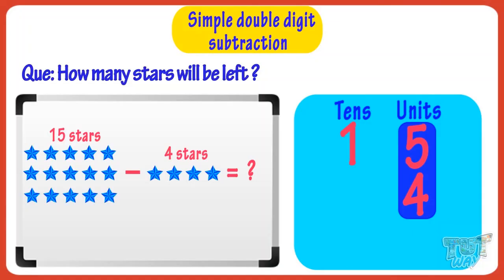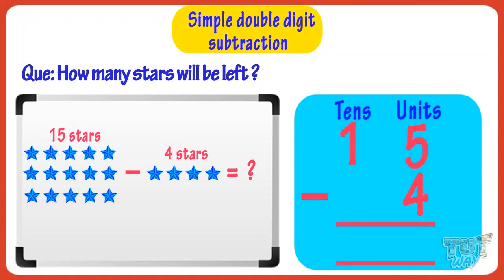Good! Now you have to subtract 4 from 15. First of all, subtract 4 from 5. 5 minus 4, you get 1. So write 1 below one's place in the sum.